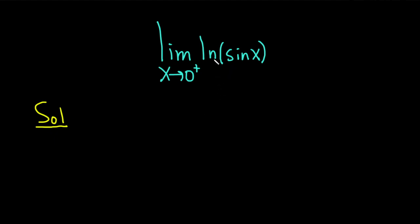So there's no real way to algebraically do this problem that I know of, so we just have to basically think about it and write down the answer. x is approaching 0 from the right, and we have the natural log of the sine of x. Let's start by looking at the graph of sine x.